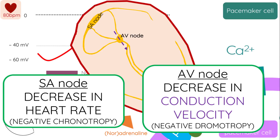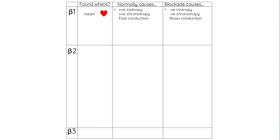The combination of these two effects is why beta-blockers can be used as antiarrhythmics — for example, in the treatment of AF. So that's an overview of how beta-blockers act on the heart.